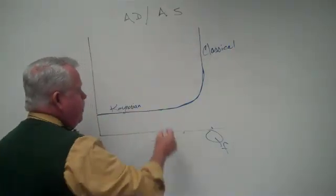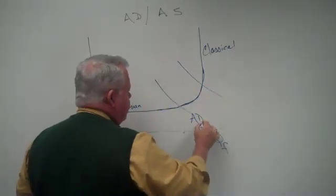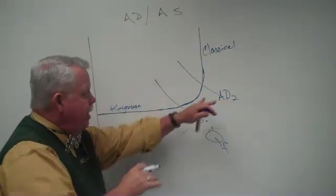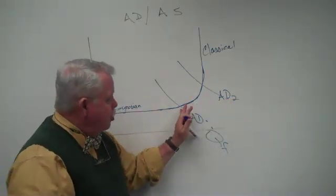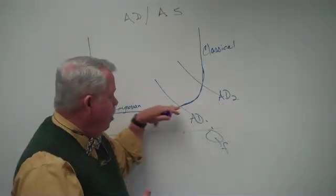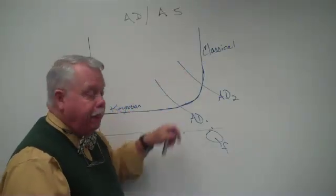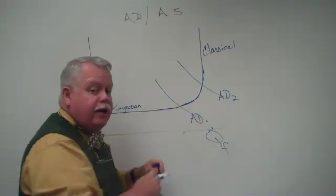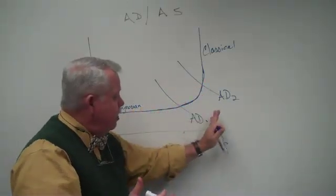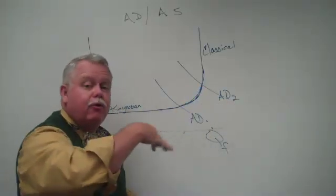And then in this intermediate range here, what we saw was that when aggregate demand changed in that range, let's say from AD1 to AD2, what happened? You got some improvement in your unemployment picture. You put more people back to work, but you also saw a worse situation in terms of higher inflation. And if you moved from AD2 to AD1, you made the inflation picture better, but you made the unemployment picture worse. And so this range in here involved some tradeoffs.